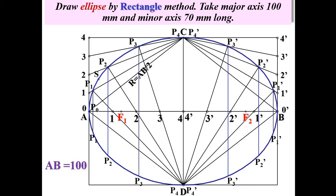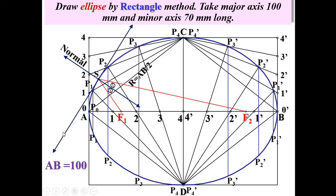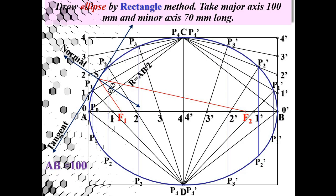Once you have F1 and F2, it is simple to draw the normal and tangent at any point. Say point S is where you want to draw the tangent. Join SF1 and SF2, then draw the bisector of this angle — that is your normal. The tangent passes through point S perpendicular to the normal. Normal and tangent must be perpendicular to each other. This completes the rectangle method for the ellipse.